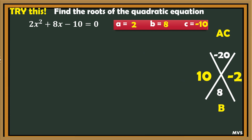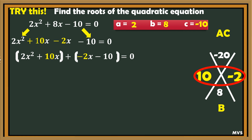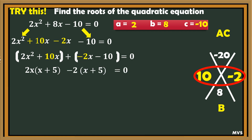Let's go to the equation. Copy the first term, copy the last term, and copy the factors to the right side. So we will have 2x squared plus 10x minus 2x minus 10 equals 0. Then group the terms: 2x squared plus 10x, and negative 2x minus 10, equals 0. Factor 2x squared plus 10x using the common factor — we have 2x(x plus 5). The factors of negative 2x minus 10 are negative 2(x plus 5). Put together the common factors: 2x minus 2, and copy the same factor x plus 5.